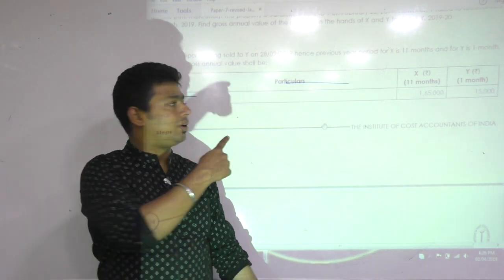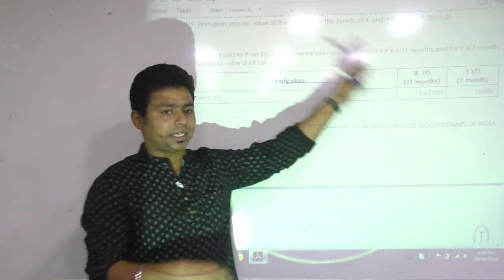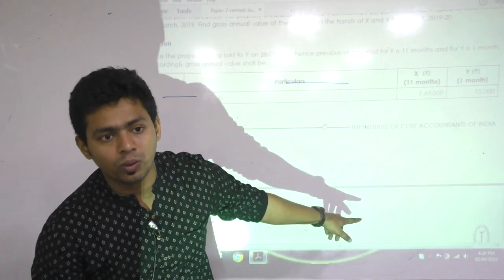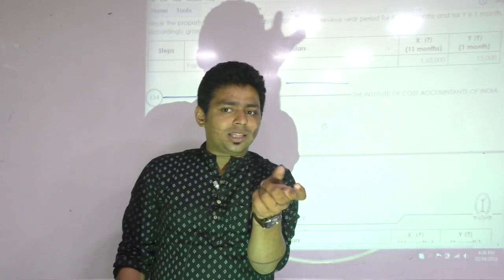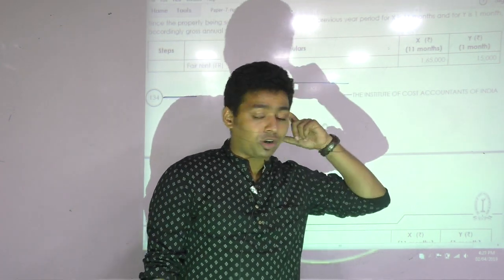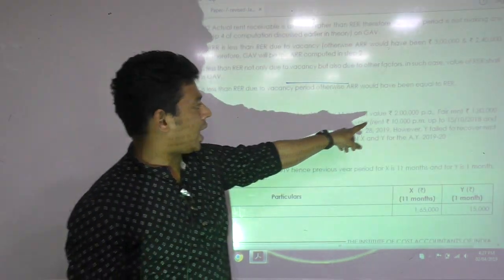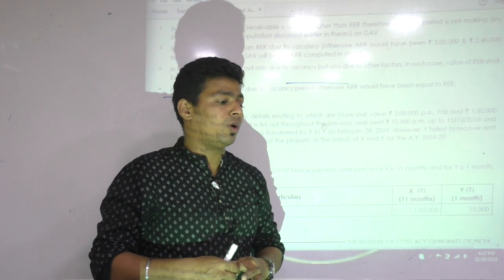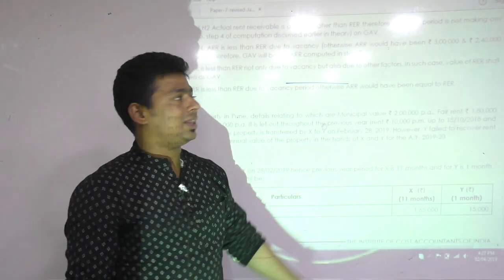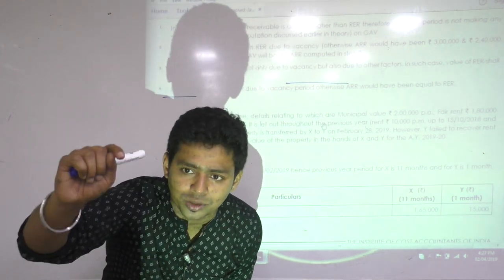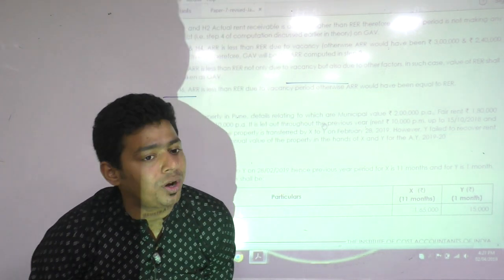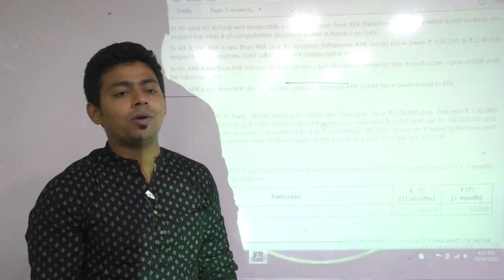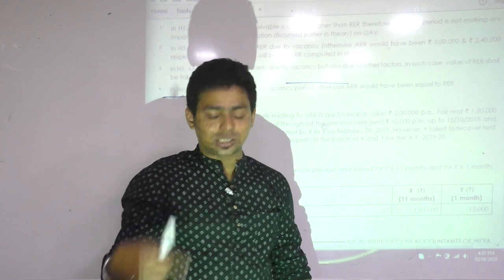Actual rent: rent received or receivable is 12,000 minus unrealized rent is also 12,000. So for X, the balance. For 1 month data you will write proportionate. You will have expected rent for X also. If 1,83,333 was expected rent for Mr. X, what will be for Y? 16,667 is his expected rent. Actual rent we computed: 12,000 rent receivable minus unrealized rent 12,000, so actual rent became nil.